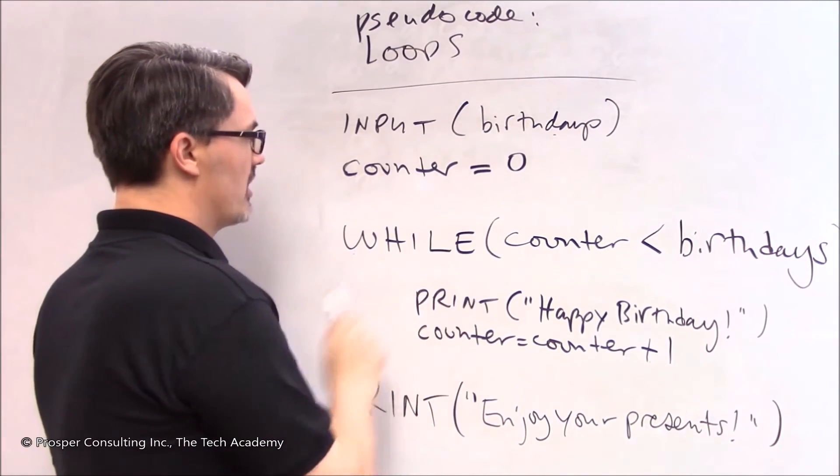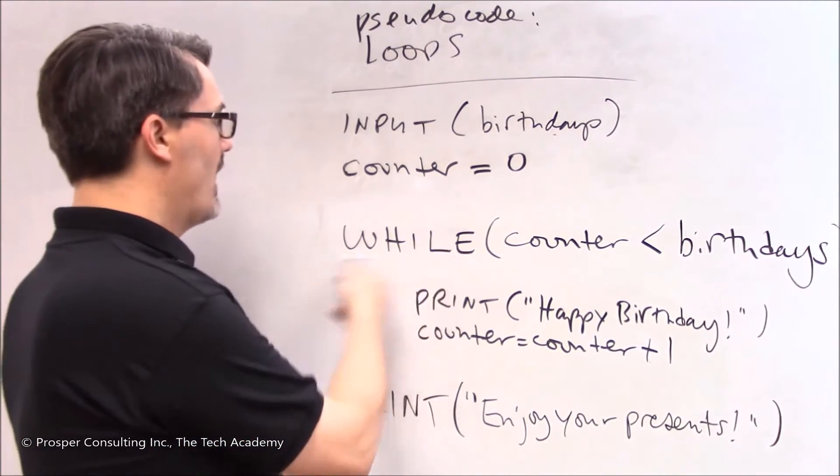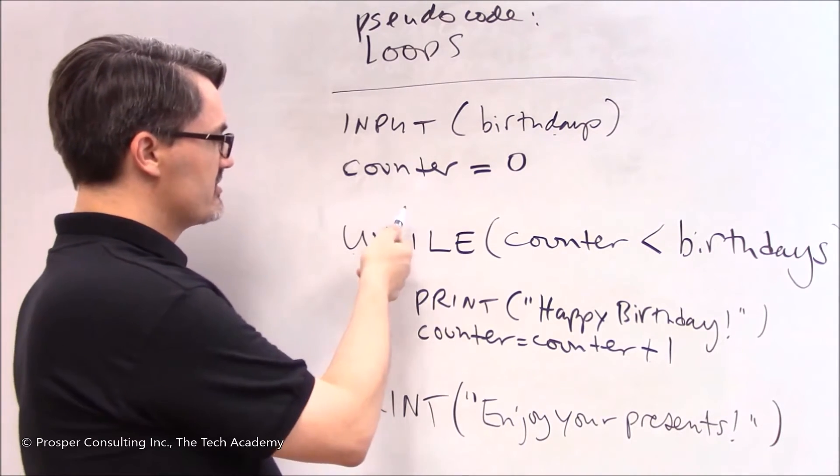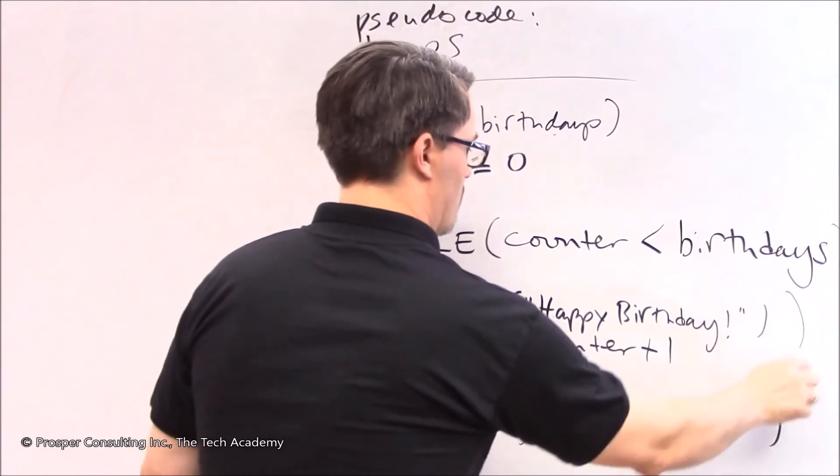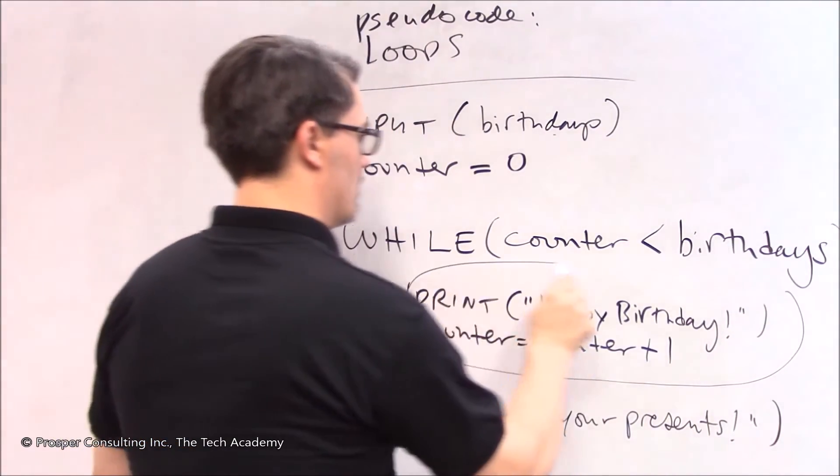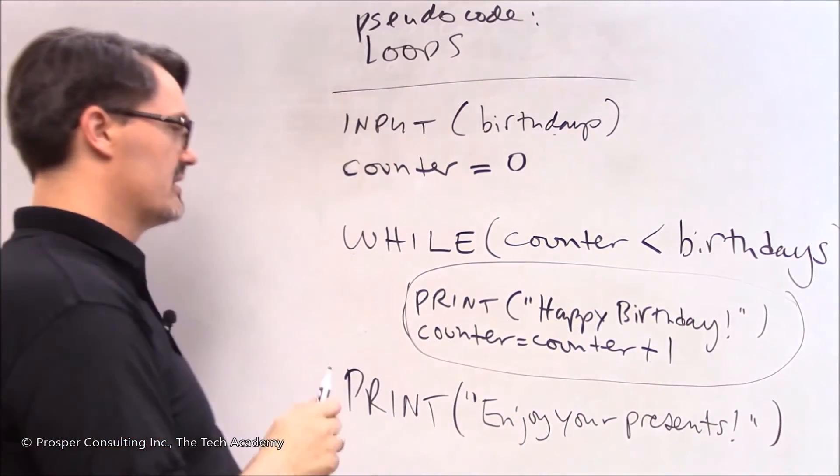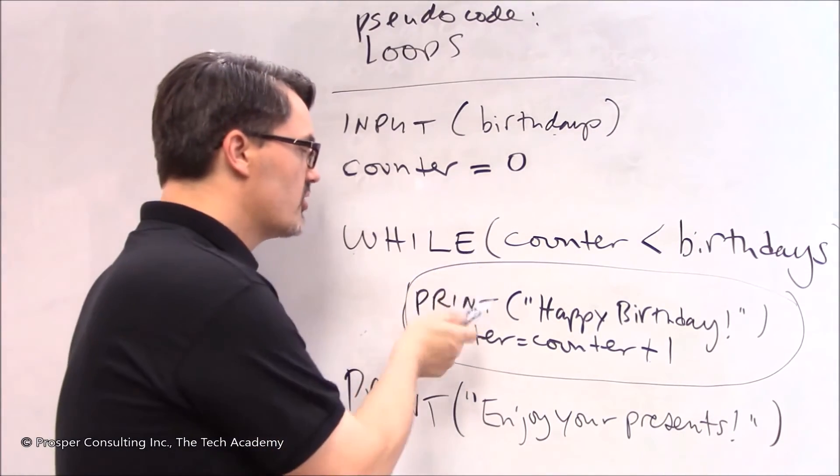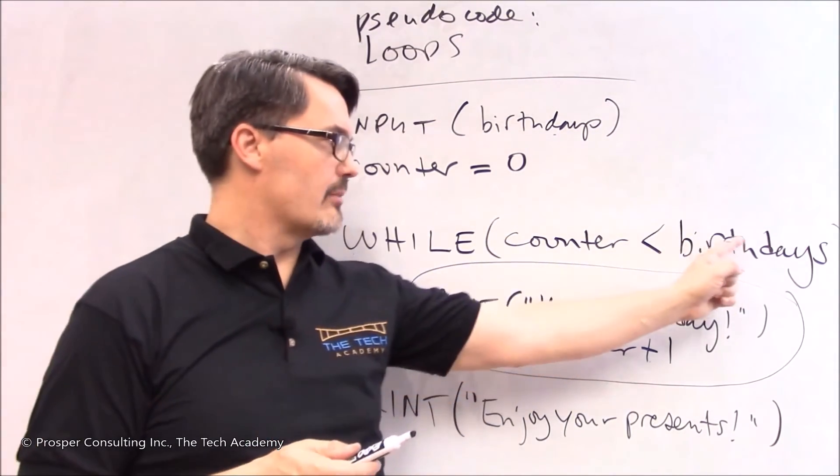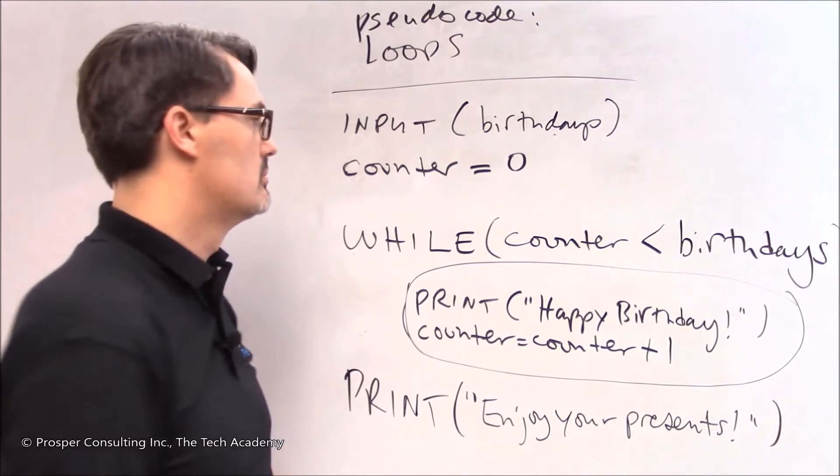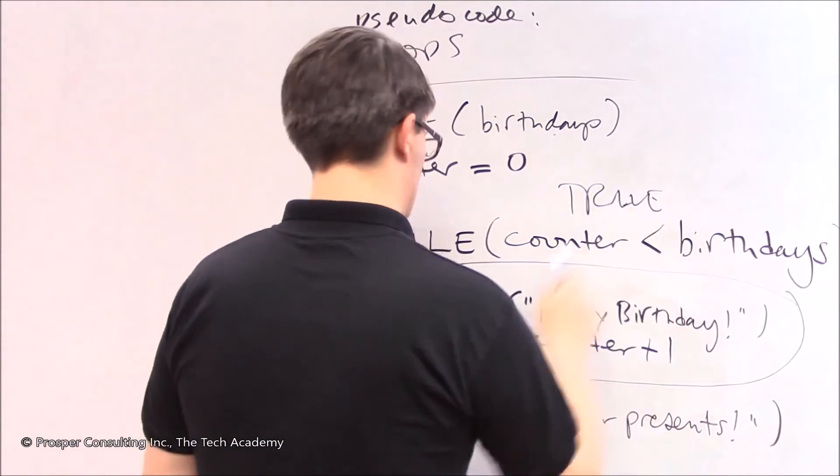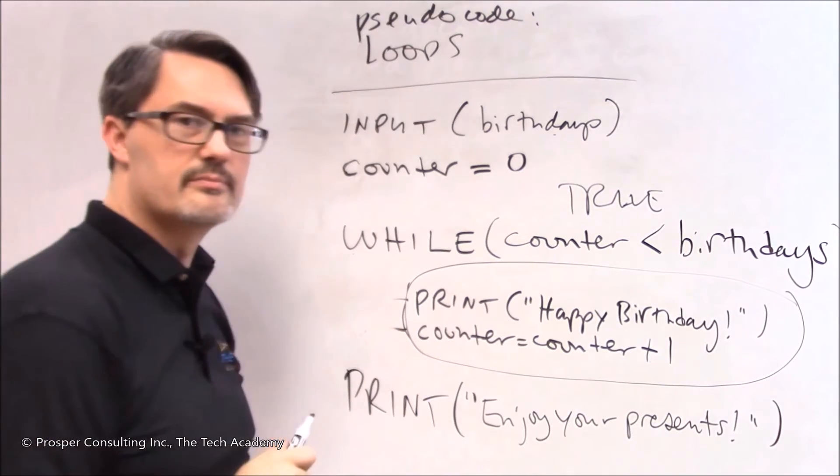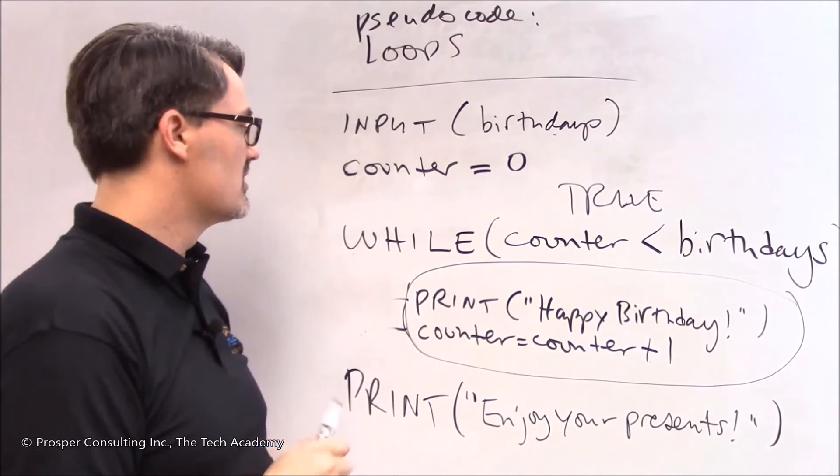Now we do something kind of cool. We use a new instruction, new to you, called while. What it means is, whatever the little sub section of program that's just below it is, do that while the conditional statement here is true. In other words, while this is true, do these two instructions.